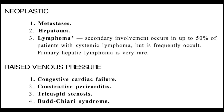In neoplastic activity, you will see space-occupying lesions within the liver causing its enlargement. In raised venous pressure, there will be additional findings like ascites. Using these distinguishing features, you can diagnose whether the hepatomegaly is due to neoplastic activity or raised venous pressure.